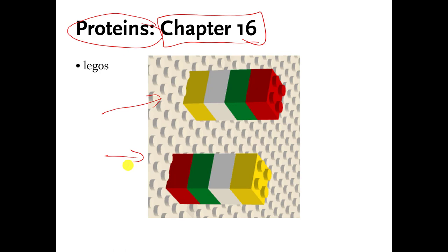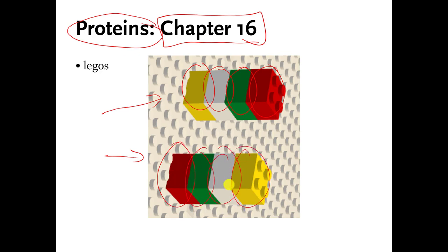Usually I show this to my on-ground students and I say here are two stacks of Legos, and I try to get into an argument with people and I say, are these two stacks of Legos identical to each other? Usually the students say no, which is the correct answer, but I try to argue about it and I say no, they're the same thing because you've got red, green, white, yellow — red, green, white, yellow — so they must be identical to each other.